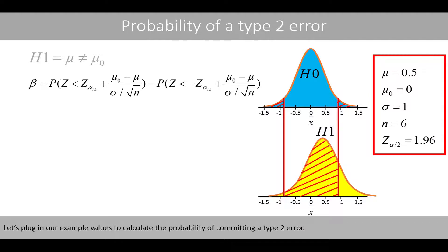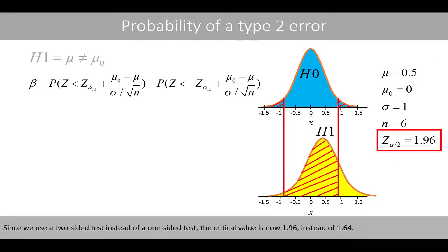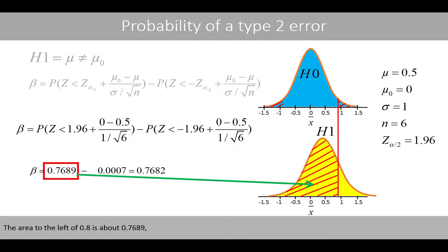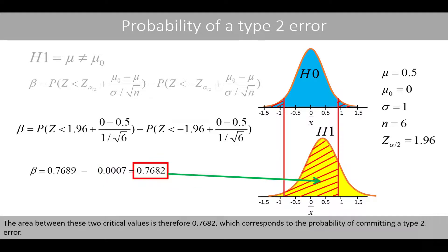Let's plug in our example values to calculate the probability of committing a type 2 error. Remember that we use a proposed value of 0.5. Since we use a two-sided test instead of a one-sided test, the critical value is now 1.96 instead of 1.64. We first plug in the values and then use the software to calculate the two areas of the standard normal distribution. The area to the left of 0.8 is about 0.7689, and the area to the left of negative 0.8 is 0.0007. The area between these two critical values is therefore 0.7682, which corresponds to the probability of committing a type 2 error.